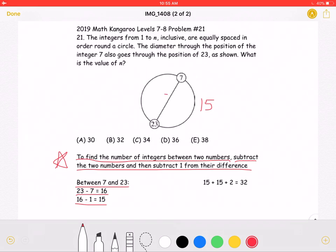Because this line is the diameter, there must be an equal amount of integers on both sides of it. If there are 15 over here, there must also be 15 integers on this side as well.